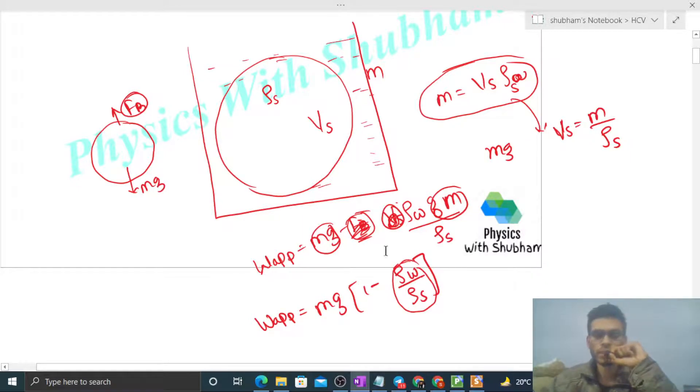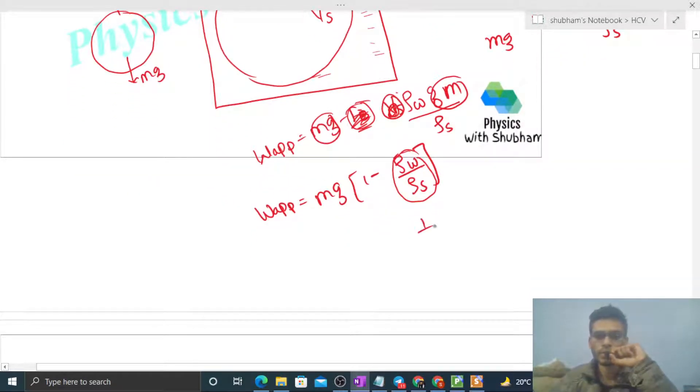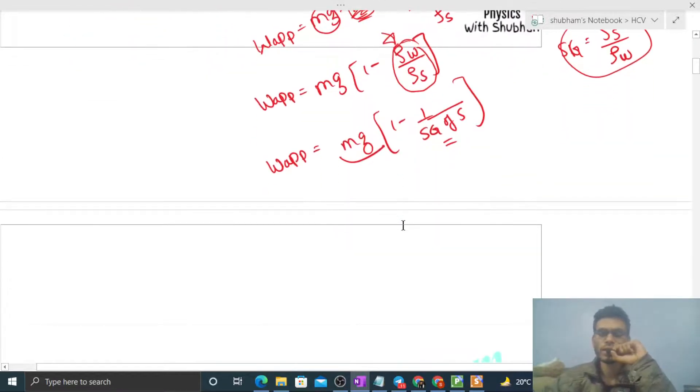And what is this rho w by rho s? That is nothing but one upon specific gravity of the solid, because specific gravity of solid is density of solid divided by density of water. So that's the inverse: density of water divided by density of solid, which is one upon specific gravity of the solid.